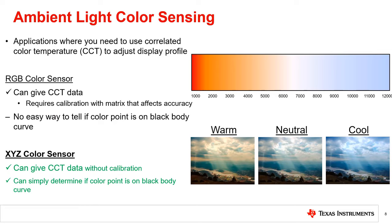XYZ color sensors can easily and accurately be mapped to the nearest CCT value without calibration. To determine if the color point should be mapped to the CCT, it is common practice to convert the XYZ coordinates to the UV color space. With a simple equation, you can determine the distance of the color point from the ideal black body curve, and invalid values can be ruled out. Nonetheless, if a cover material is used that shifts the color point, both RGB and XYZ color sensors will require calibration.